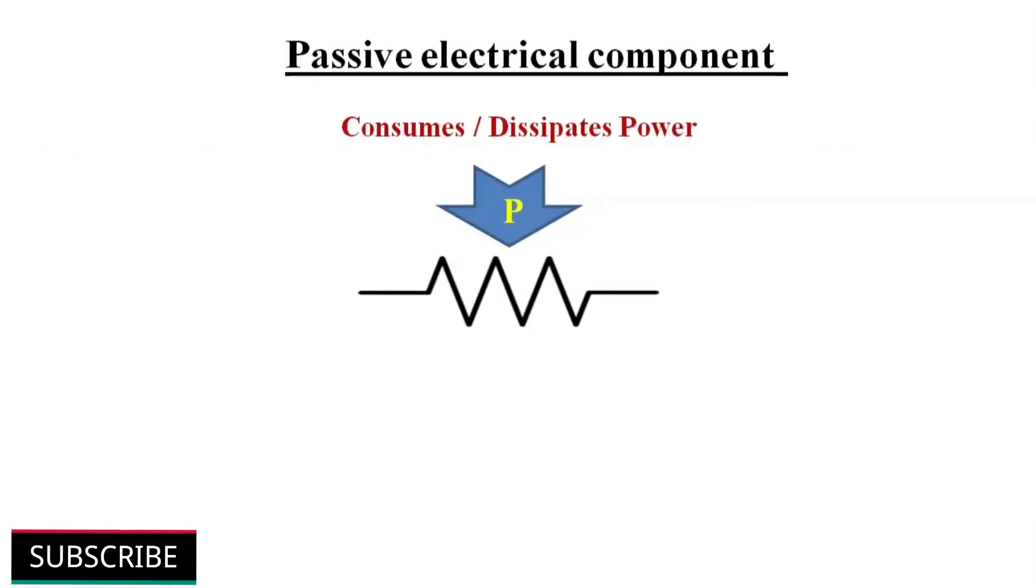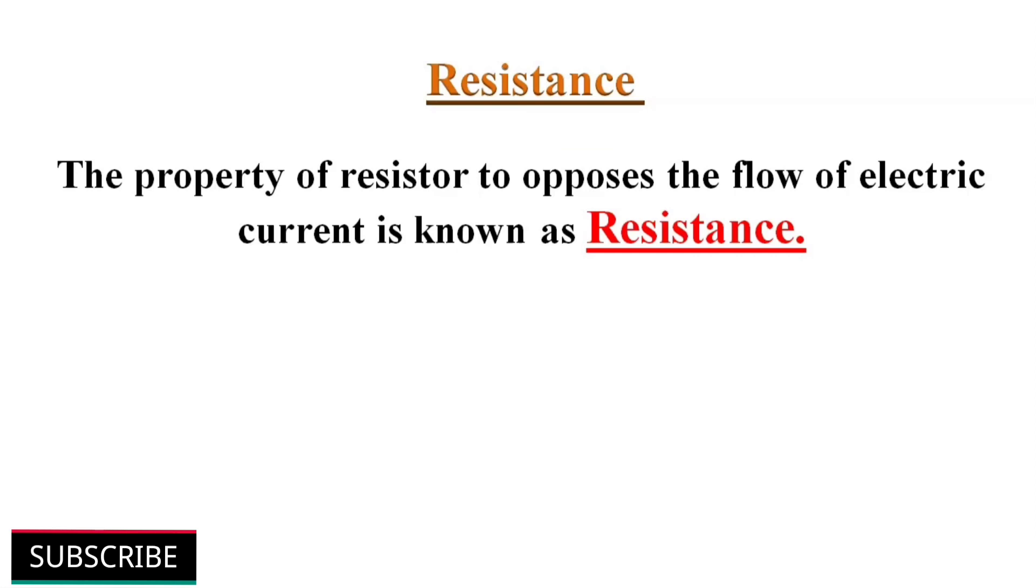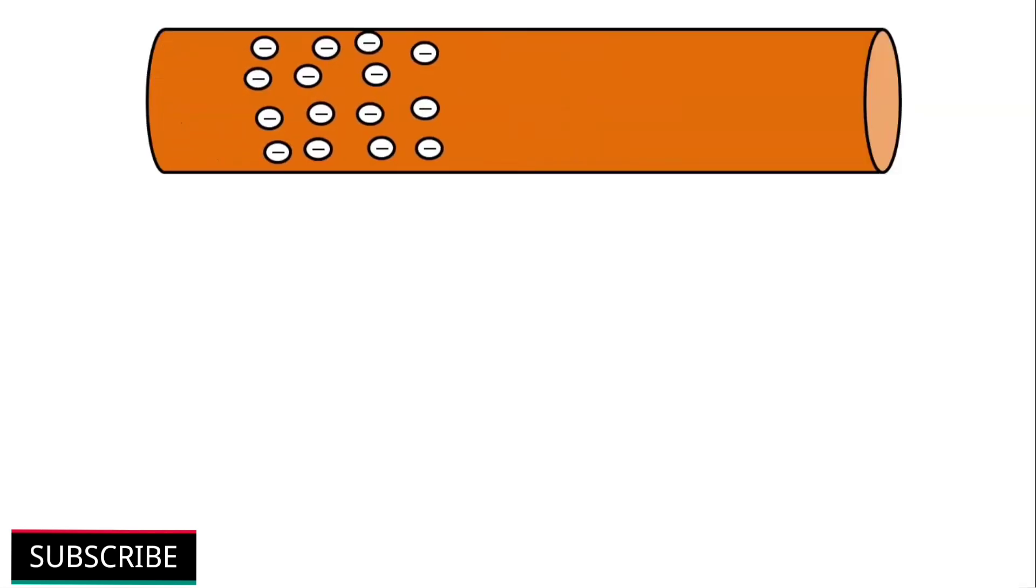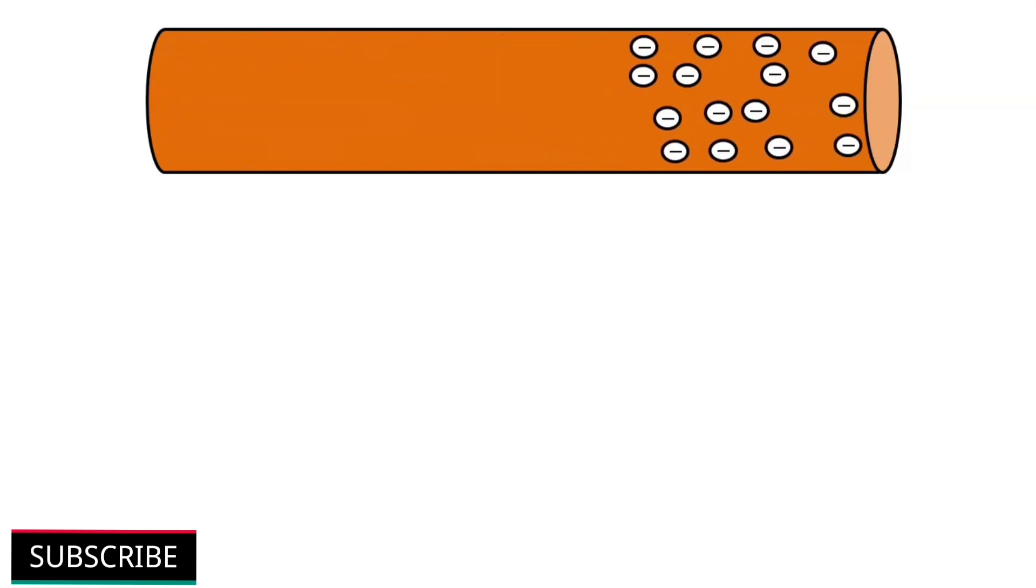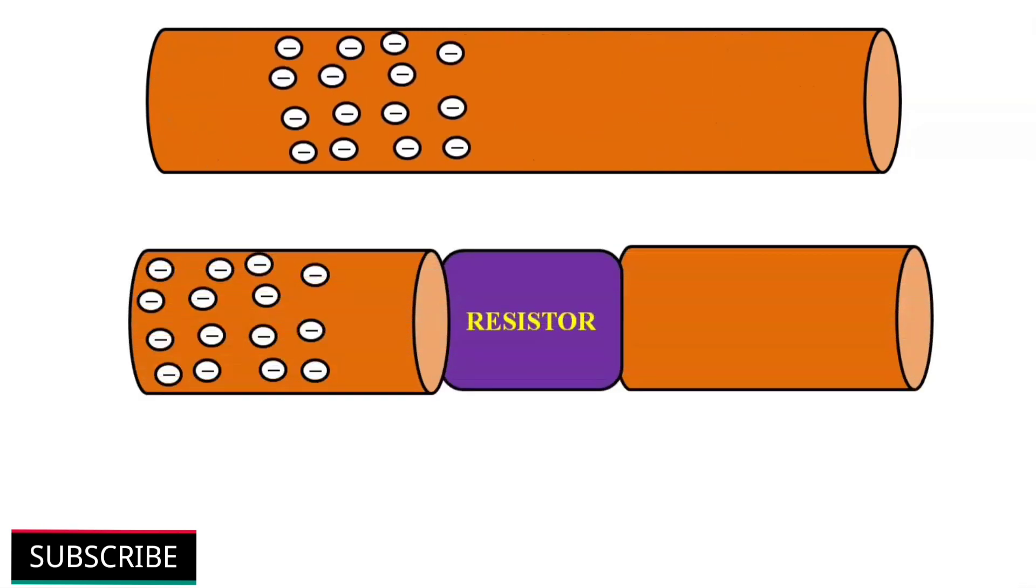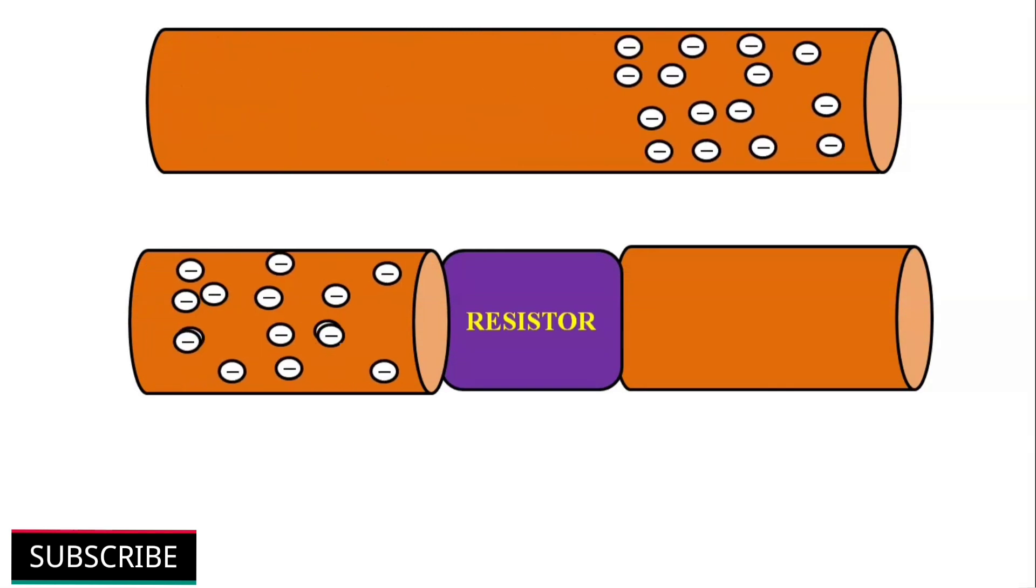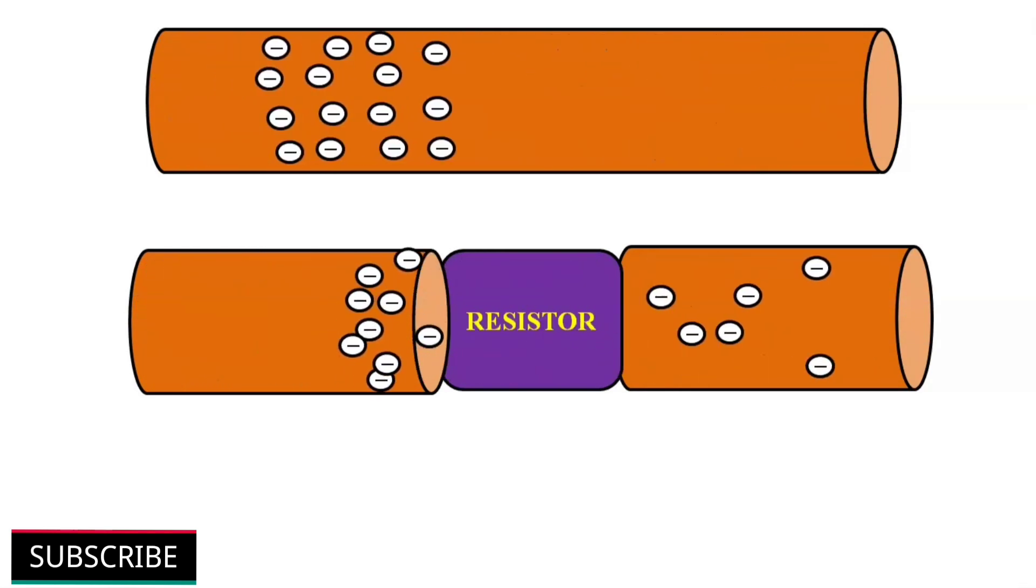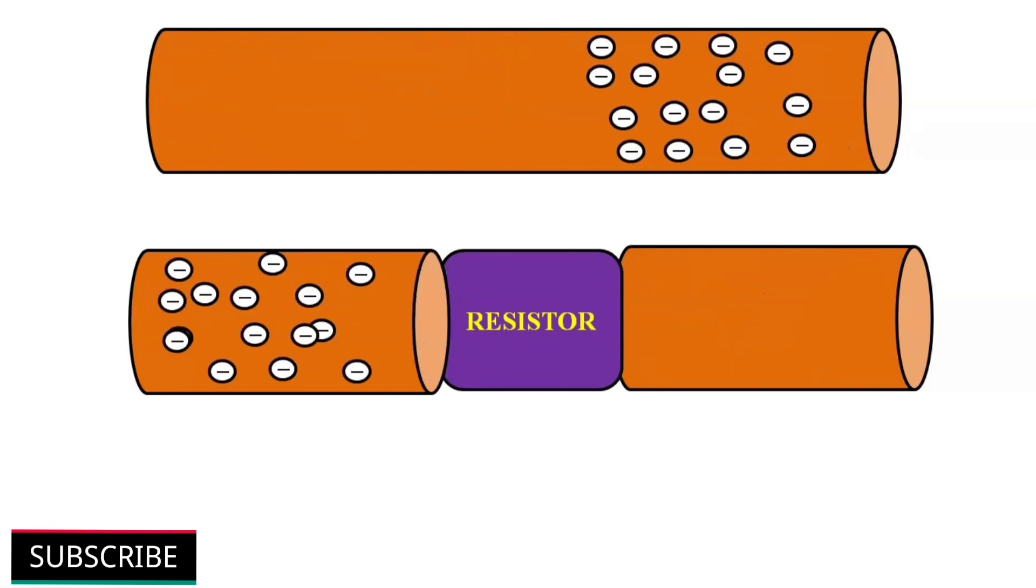Resistors are passive devices, that means they consume or dissipate electric power in an electronic circuit. This property of resistor to oppose the flow of electric current is known as resistance. As we know, the uniform motion of electric charge or electrons in a conductor is what we call current. If we connect a resistor between two conductors, some electrons are unable to pass through the resistor, so we get a reduced current flow.